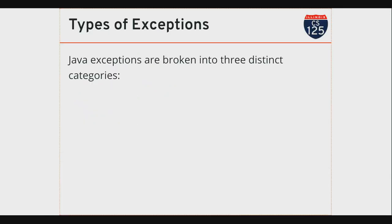Java breaks exceptions into three categories, and this is reflected in Java's type system. If you look at exceptions, there's actually a superclass of all of these called Throwable — that's anything you can put in a throw statement. Java's type system breaks exceptions into three different categories, and this affects how you use things as a programmer.